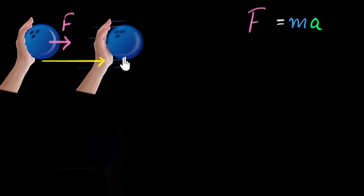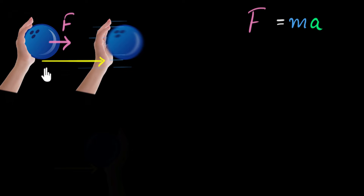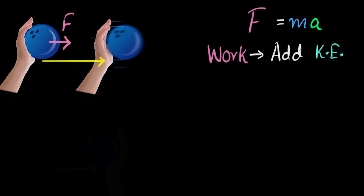Now let's think in terms of work done. Because you are pushing on the ball and displacing it, you're doing work on it. And when you're doing work, look at what happened: initially the ball had no speed — it was at rest, so it had no kinetic energy. But after doing work, it has gained kinetic energy. So by doing work, we have added kinetic energy to our bowling ball. Whenever work is done on an object, kinetic energy gets added to that object.